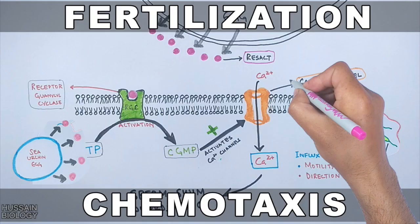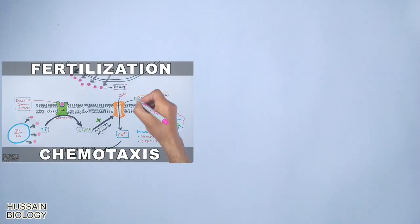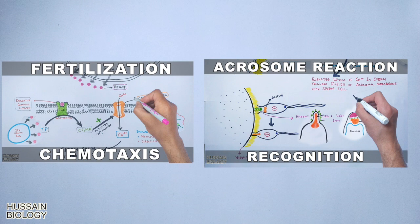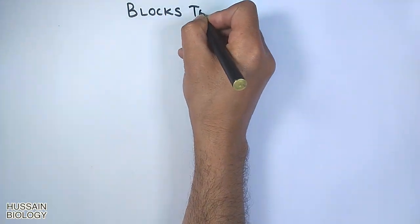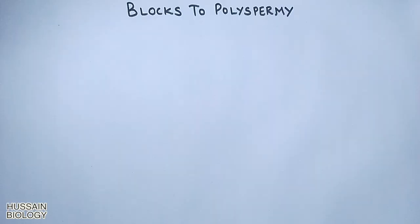In this series of videos we have been discussing about the fertilization process. Previous videos included chemotaxis and acrosomal reaction. If you want to watch those videos first, the link is in the description. Now in this video we will be discussing about the blocks to polyspermia.